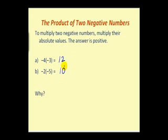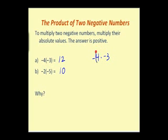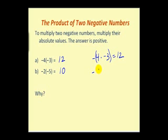Let's justify why this is true. When we write the number negative 4, we can think of it as the opposite of positive 4. So multiplying by negative 3, we view this as the opposite of positive 4 times negative 3. Based on our previous argument, positive 4 times negative 3 is negative 12, and the opposite of negative 12 is positive 12. Similarly, negative 2 times negative 5 is the opposite of 2 times negative 5, which is the opposite of negative 10, giving positive 10.